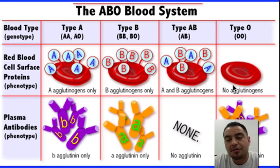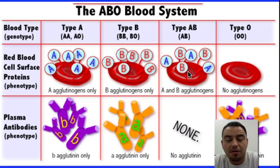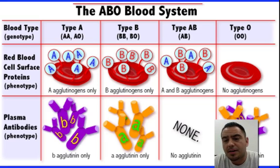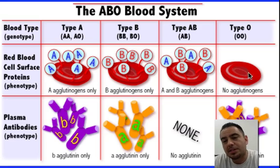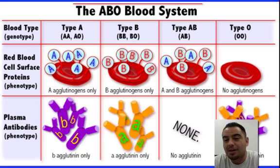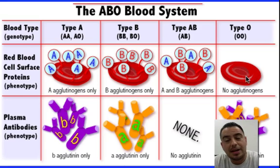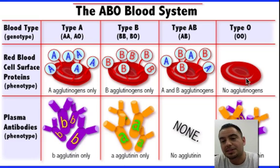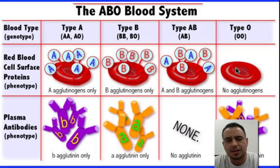So who can receive from anyone? AB can receive from any blood type — they're the universal recipient. If you're in an accident and you're blood type AB, pretty much any blood, as long as it's checked for HIV or anything, you can use it. But if you're blood type O, you can give to anyone as the universal donor. However, if you're in an accident and need blood, you can only receive from blood type O — you can't get it from any other type because you don't recognize it. That's the idea with blood type systems.